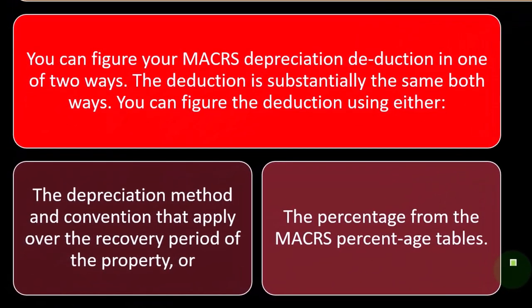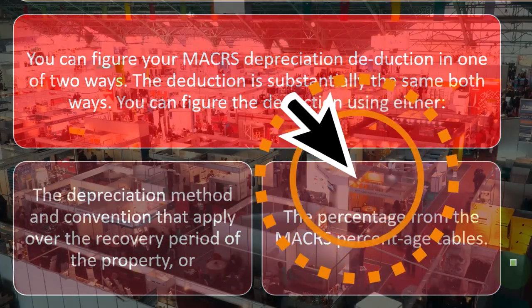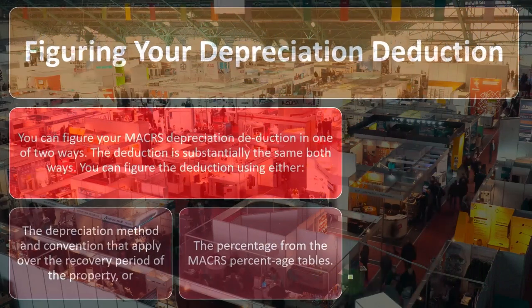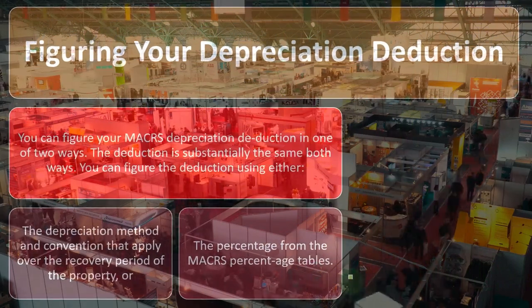So basically you can calculate the depreciation manually. If it's a double declining basis, you can calculate it, but the double declining in particular gets confusing, especially when you throw in the half-year convention. So you could use the percentage tables, which have shortcutted some of the calculations. Obviously in practice, we'll probably use software to calculate it.